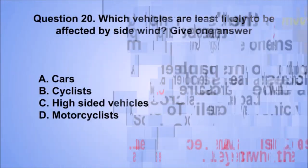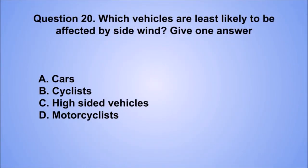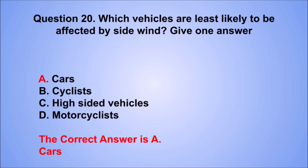Question 20. Which vehicles are least likely to be affected by side wind? Give one answer. A: Cars. B: Cyclists. C: High-sided vehicles. D: Motorcyclists. The correct answer is A: Cars.